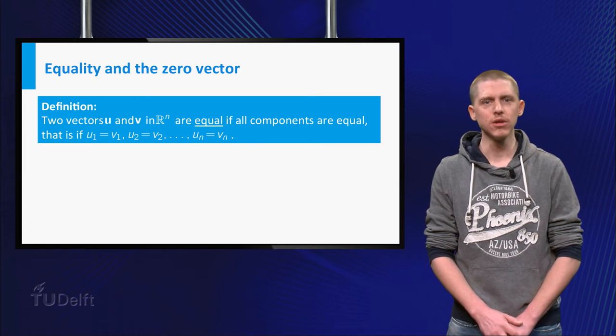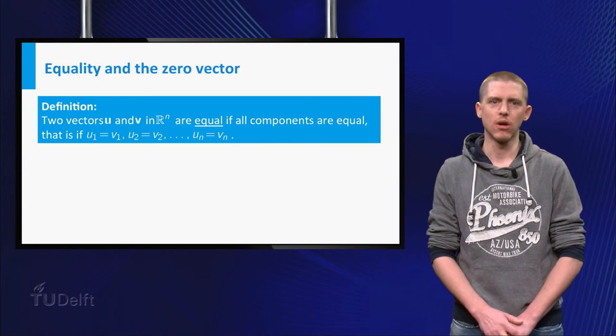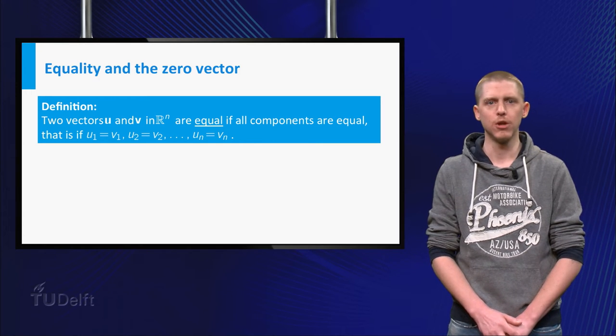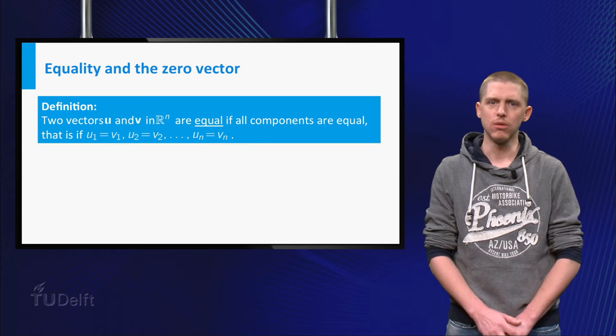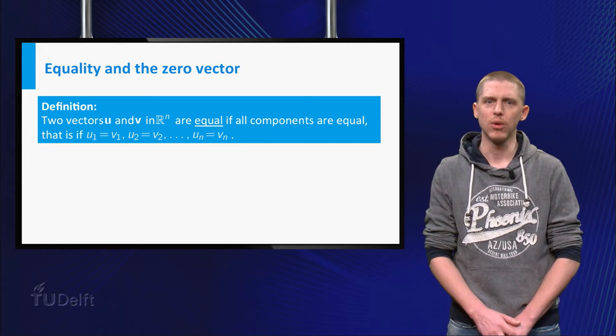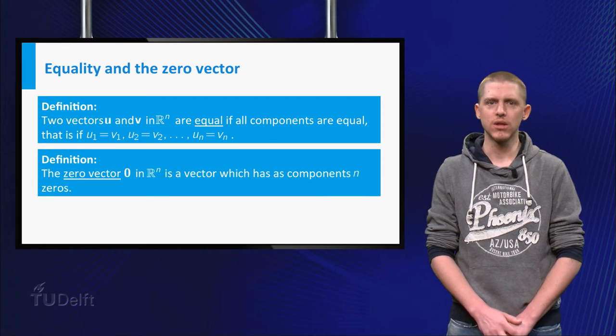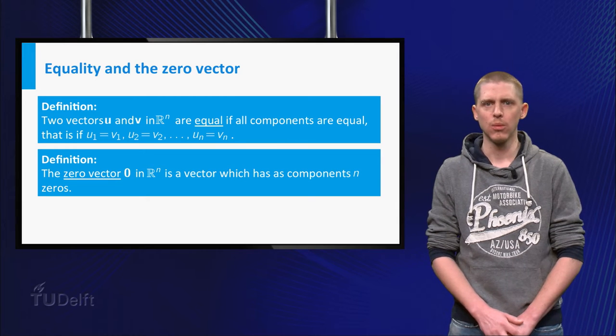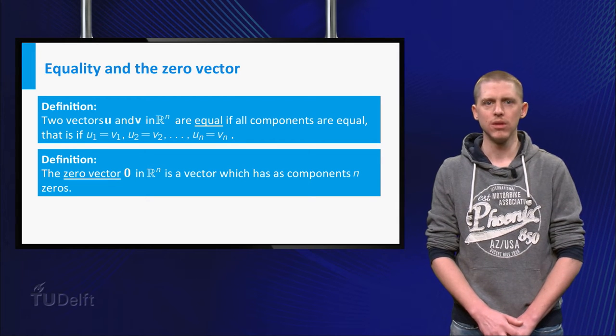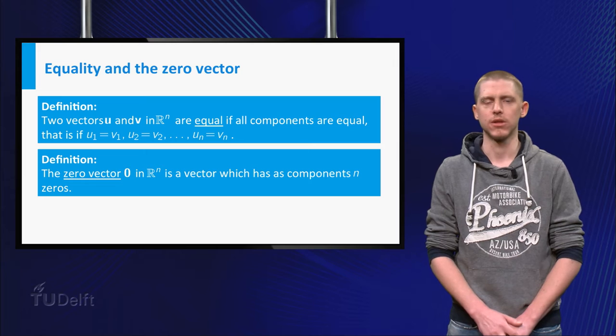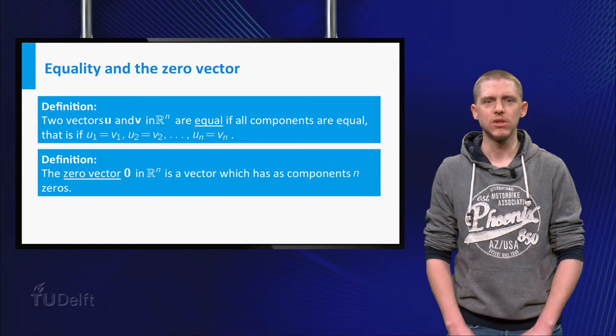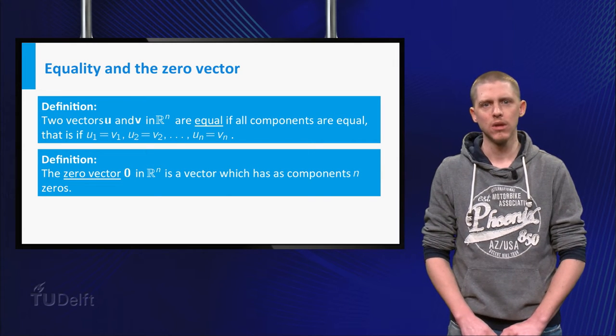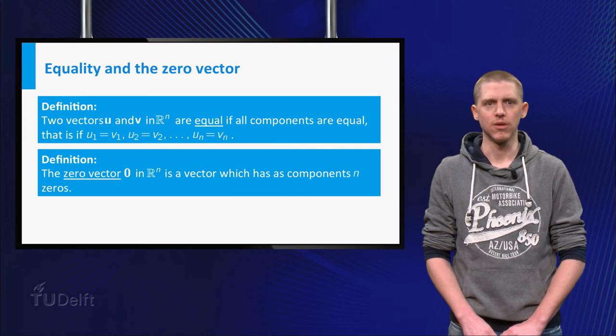Now assume you have two vectors, u and v, both in Rn. Just as for two or three components, u and v are equal if and only if all components are equal. There exists a special vector in Rn which has all components zero. This vector is called the zero vector. The number of zeros this vector has is sometimes given, but mostly it is clear from the context.